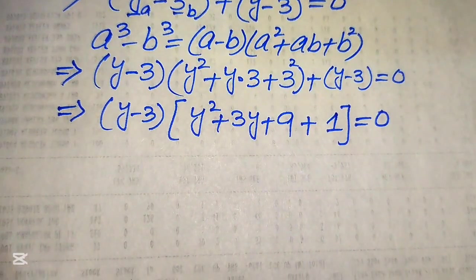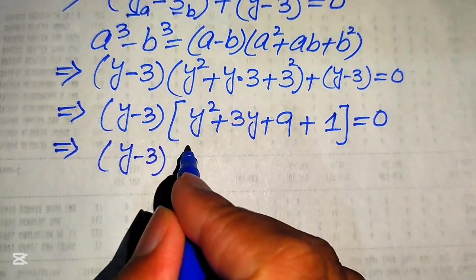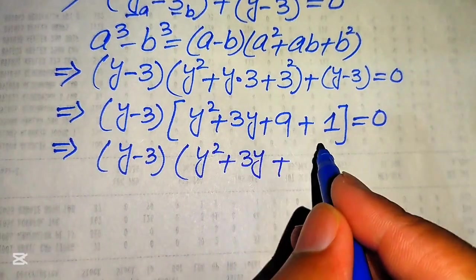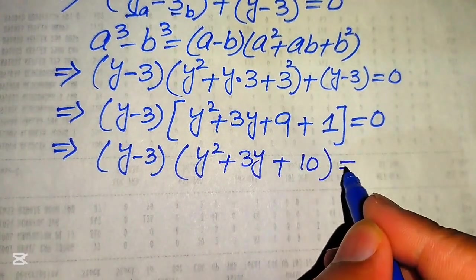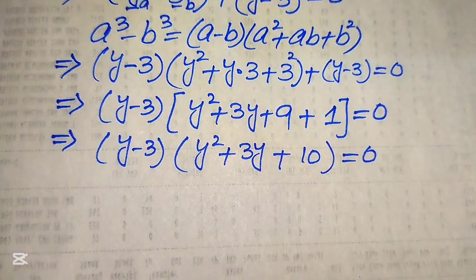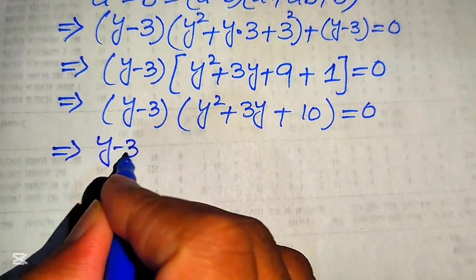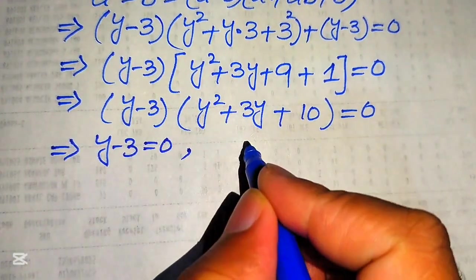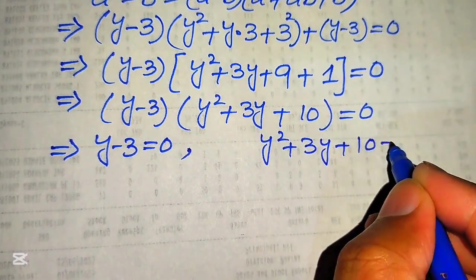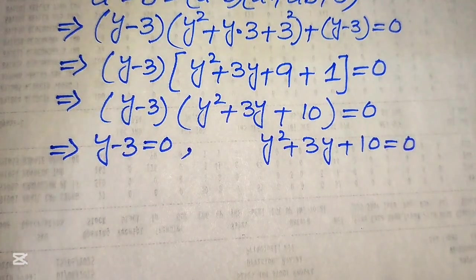Simplifying, 9 + 1 = 10, so we have (y − 3)(y² + 3y + 10) = 0. We now divide this into two cases: Case 1: y − 3 = 0, and Case 2: y² + 3y + 10 = 0.